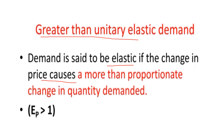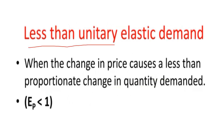Greater than unitary elastic demand (Ep > 1): demand is elastic if a change in price causes a more than proportional change in quantity demanded — the change in quantity demanded is greater than the change in price. Less than unitary elastic demand (Ep < 1): when a change in price causes a less than proportional change in quantity demanded.